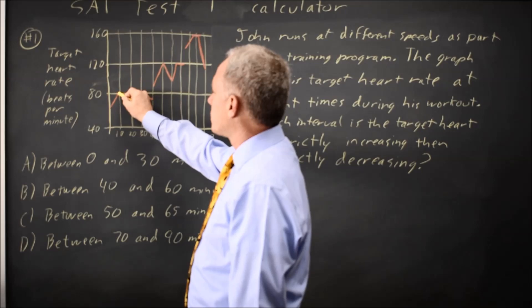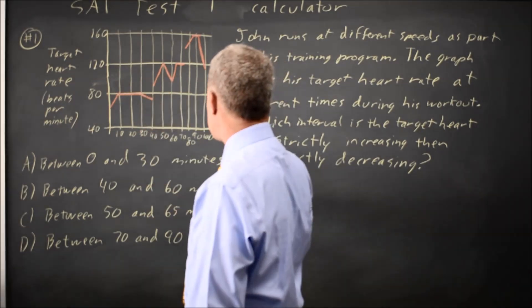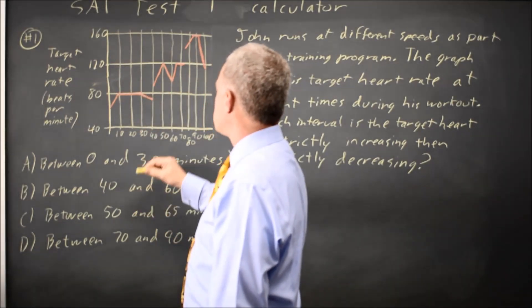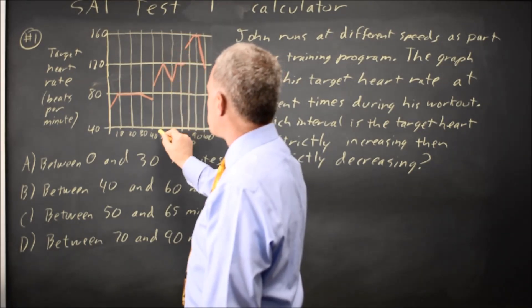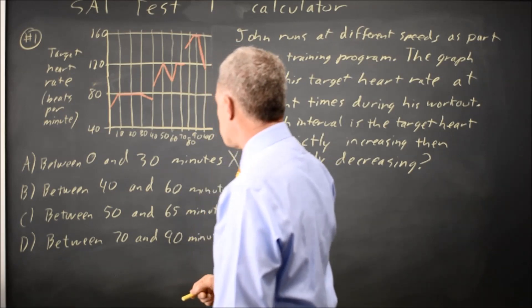From time 0 to 30 we're strictly increasing and then constant which is not decreasing. 40 to 60 we're increasing from 40 to 50 and decreasing from time 50 to time 60 so that looks like it works.